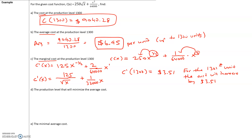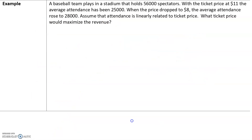Find the production level that will minimize the average cost. Parts D and E we're going to actually skip, so don't worry about those.